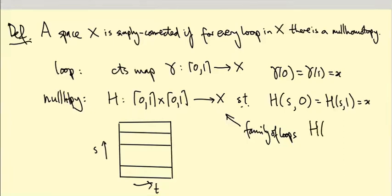So H of (0, t)—so the loop I get by just looking at this bottom edge of the square—this is gamma(t).